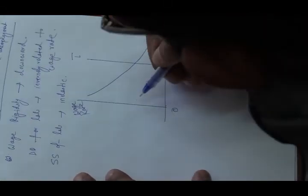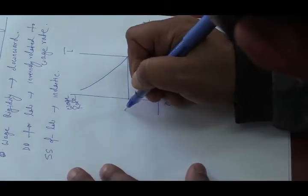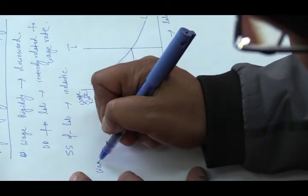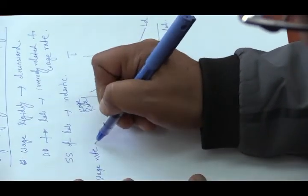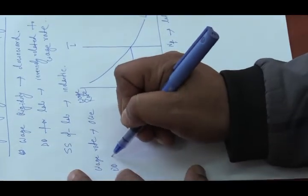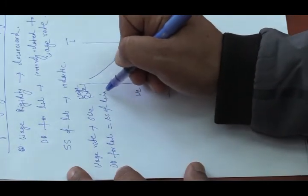As per the demand supply mechanism, if wage rate is WE, if wage rate is OWE, we can see demand for labour will be exactly equal to supply of labour.